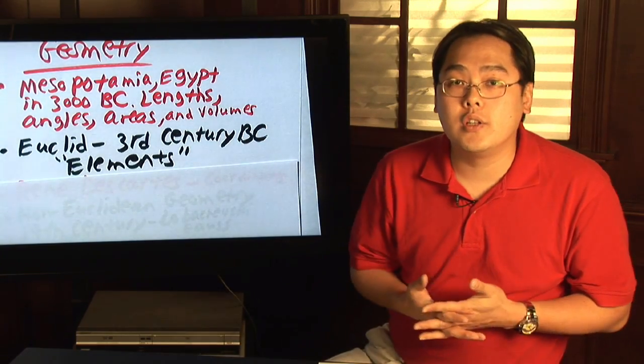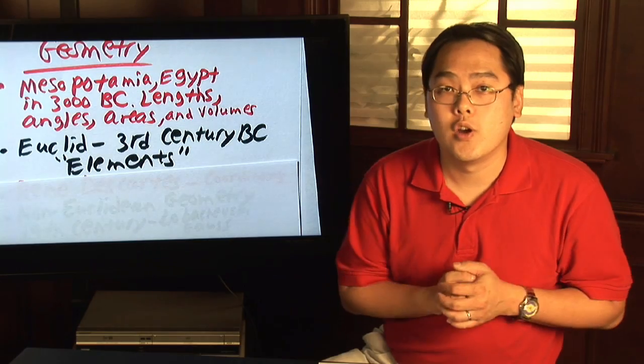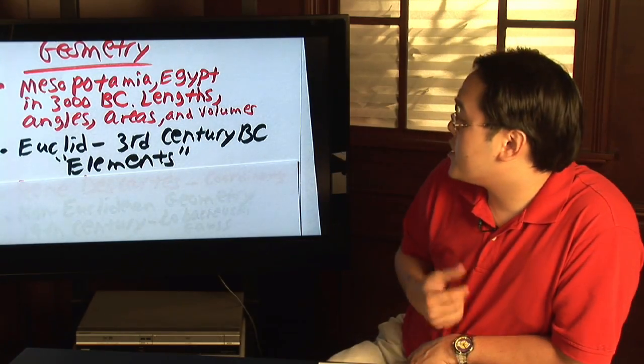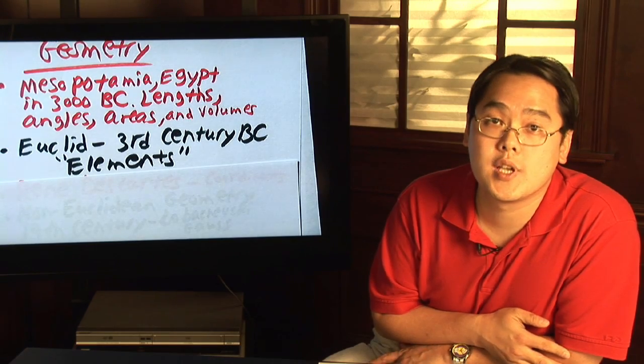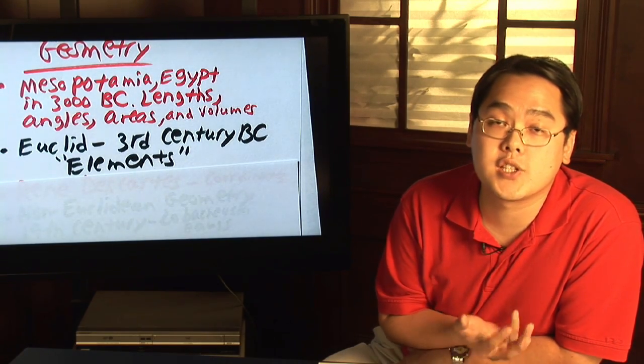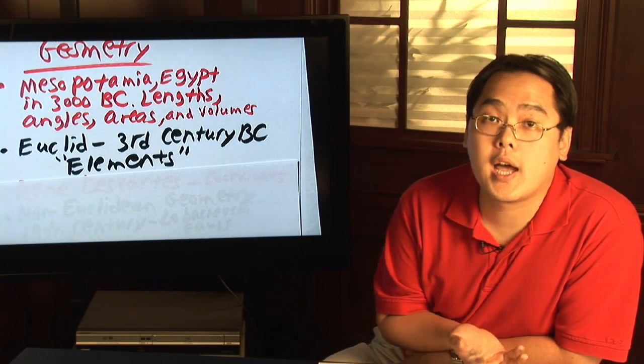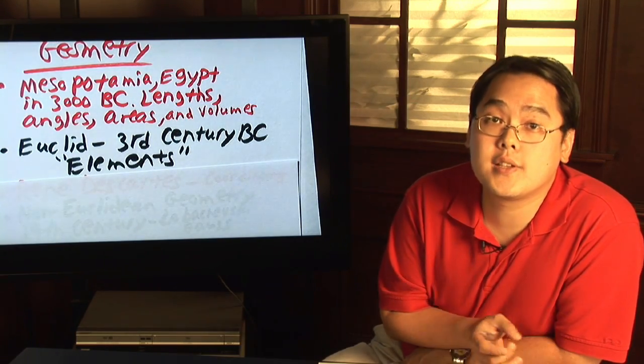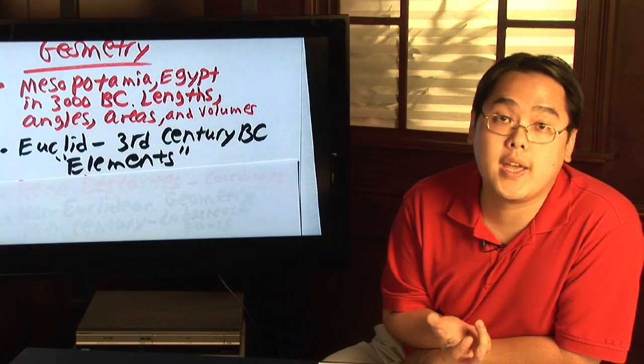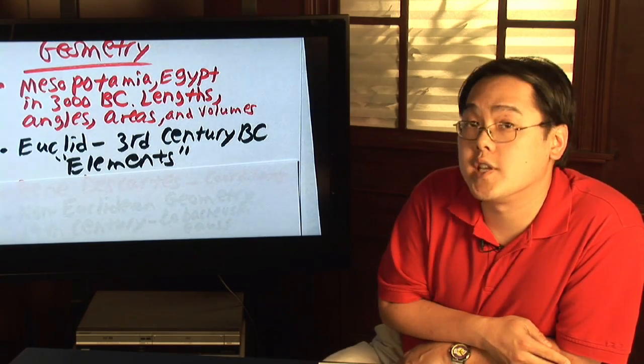We can credit Euclid with a lot of the advances in geometry over the centuries. Because in third century BC, he wrote a multi-volume work called Elements, which consisted of a lot of postulates and statements involving lines, points, angles, et cetera. A lot of things that he wrote led to the way of Euclidean geometry, which is obviously named after him.